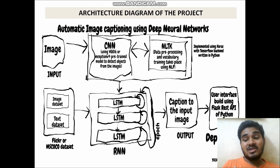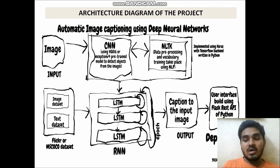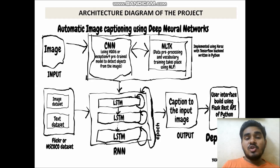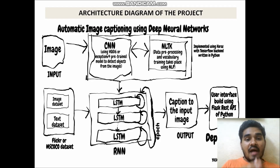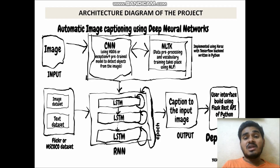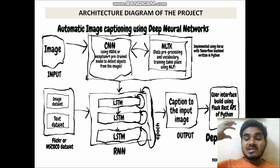In our project we have used two different neural networks: CNN and LSTM. CNN is a convolutional neural network, similar to a feed-forward neural network which receives input from the user, has some hidden layers, and produces output. Convolutional neural networks are mainly used for image processing, object detection, and face detection. We are using a pre-trained model of CNN to detect objects in images, and later using NLTK — natural language toolkit, a part of natural language processing — to process the detected objects.